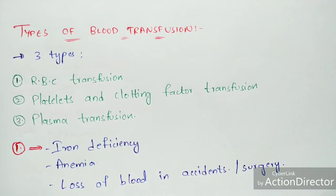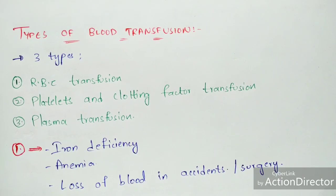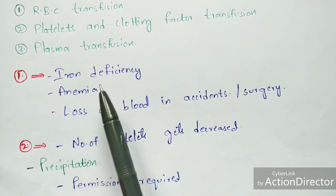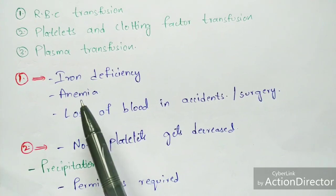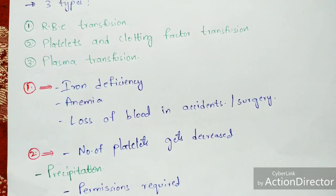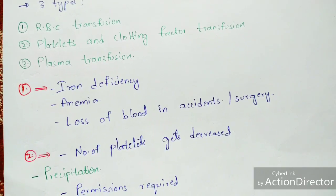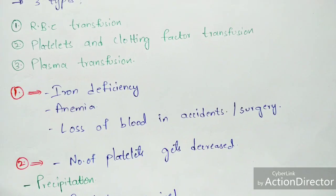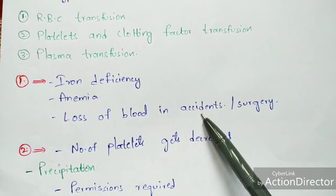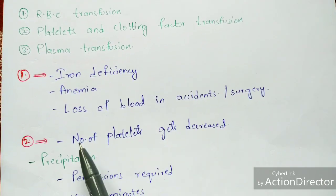There are three types of blood transfusion: RBC transfusion, platelet and clotting factor transfusion, and plasma transfusion. RBC transfusion is used when a patient is suffering from iron deficiency or anemia, where the body doesn't have enough red blood cells. It is also used when there is loss of blood due to accidents or surgeries.